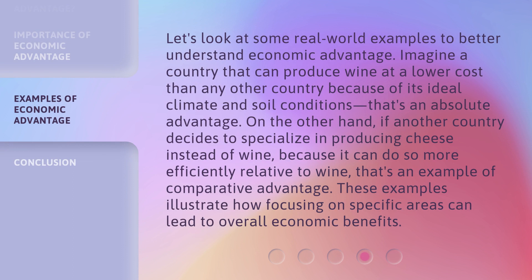Let's look at some real-world examples to better understand economic advantage. Imagine a country that can produce wine at a lower cost than any other country because of its ideal climate and soil conditions — that's an absolute advantage. On the other hand, if another country decides to specialize in producing cheese instead of wine, because it can do so more efficiently relative to wine, that's an example of comparative advantage. These examples illustrate how focusing on specific areas can lead to overall economic benefits.